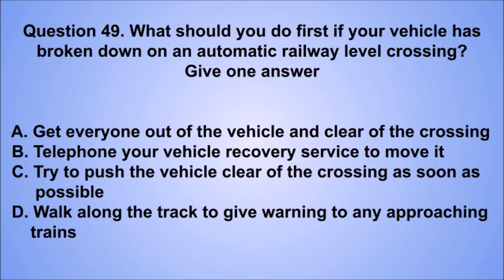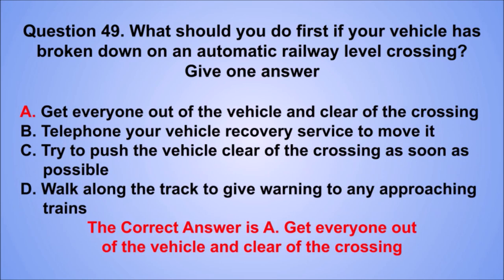Question 49. What should you do first if your vehicle has broken down on an automatic railway level crossing? Give one answer. A: Get everyone out of the vehicle and clear of the crossing. B: Telephone your vehicle recovery service to move it. C: Try to push the vehicle clear of the crossing as soon as possible. D: Walk along the track to give warning to any approaching trains. The correct answer is A: Get everyone out of the vehicle and clear of the crossing.